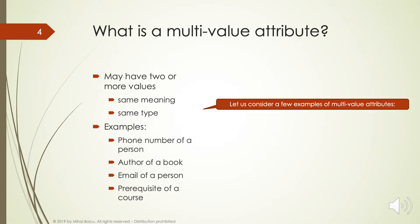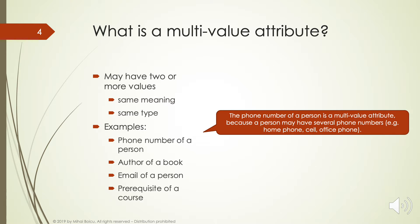Let us consider a few examples of multi-value attributes. The phone number of a person is a multi-value attribute because a person may have several phone numbers — for instance, a home phone, cell phone, and office phone.